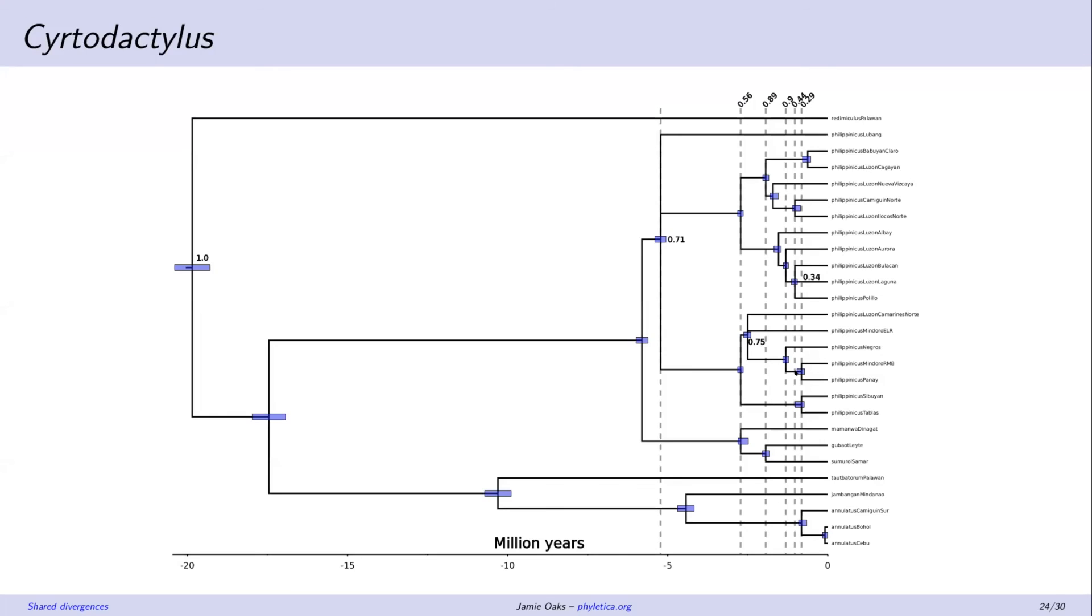We're finding some moderate support for shared divergences around the time period that these islands are being fragmented. But it's also the time period where we have the most divergences happening. So we have to take account for that in assessing the significance of these results. But still pretty cool results here. And these are very new and totally thanks to my postdoc for getting these data together in time for this talk.